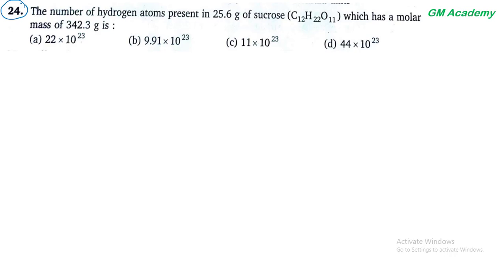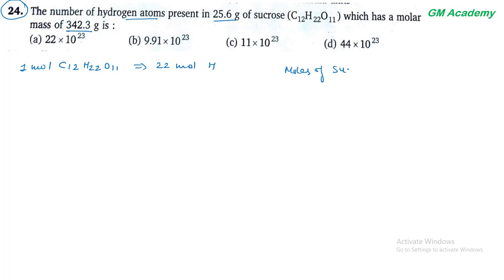Next question 24. The number of hydrogen atoms present in 25.6 gram of sucrose. Sucrose का molar mass 342.3 gram दिया गया है। Sucrose C₁₂H₂₂O₁₁ में 22 mol hydrogen atoms होती हैं। Moles of sucrose = 25.6 / 342.3 = 0.0747 mol।